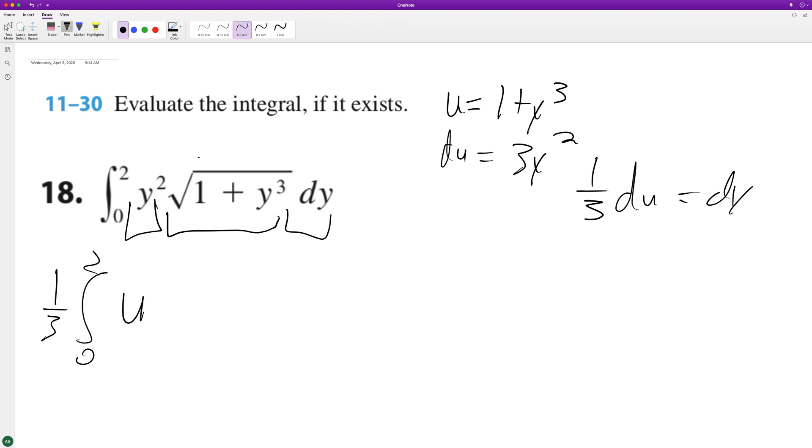be u to the square root, the same thing as u to the one-half du. So we integrate this, we end up with - we add one to this, becomes three-halves, and then we divide by that, and it's the same thing as